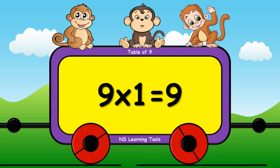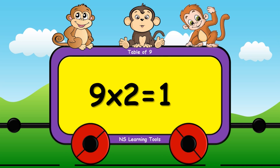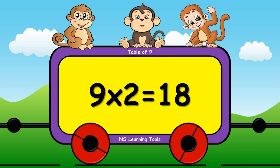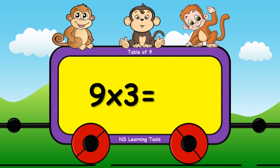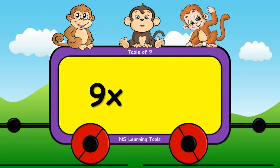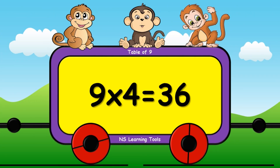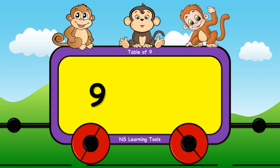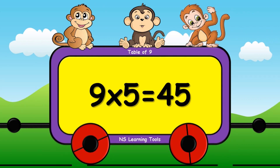9 ones are 9. 9 twos are 18. 9 threes are 27. 9 fours are 36. 9 fives are 45.